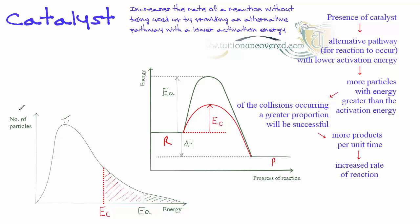The same is shown on the Maxwell-Boltzmann distribution curve. The activation energy without the catalyst is higher. When a catalyst is present, the activation energy is reduced, so more particles in the sample have energy greater than the activation energy, meaning more will have successful collisions and therefore the rate of the reaction increases. See the Q&A video for more examples of questions related to catalysts and collision theory.